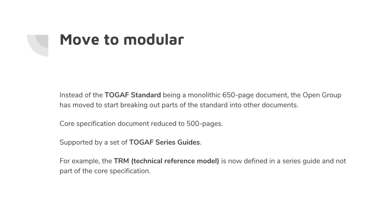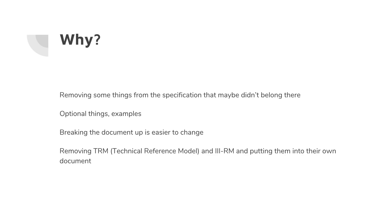To give you an example, the TRM — which is the Technical Reference Model — and the III-RM are now in a Series Guide and are not part of the core specification. Why are they making it modular? Well, there were a few things in there that were examples and not part of the core standard — reference models and examples from other standards — that weren't really contributing to the standard itself; they were just extra content.